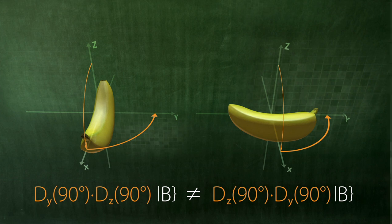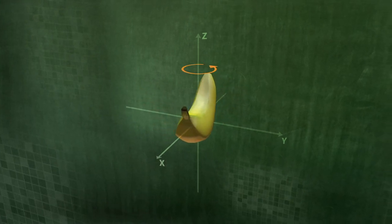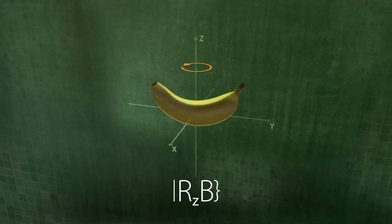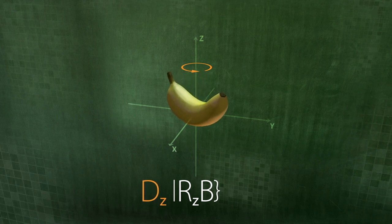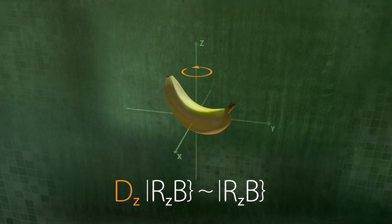Let us now consider a slightly different state: a banana that is rotating about its z-axis. Let us express this state with RZB. Applying a rotation operator along the rotational axis of the banana does not change its state. This banana has a so-called eigenstate.